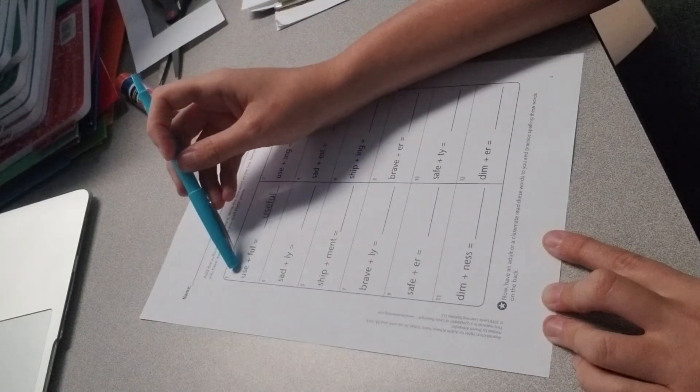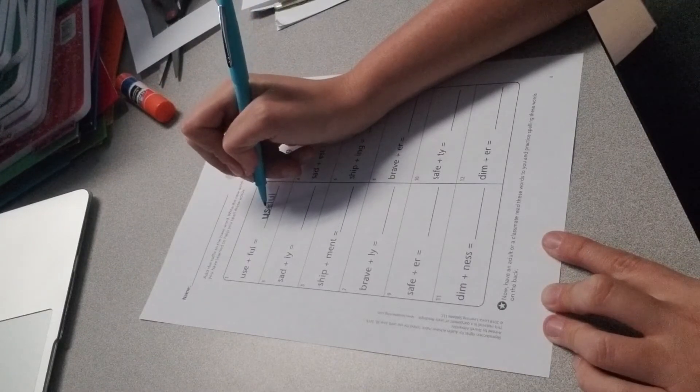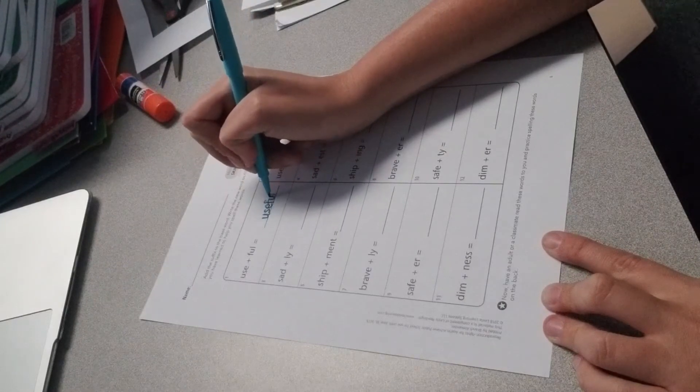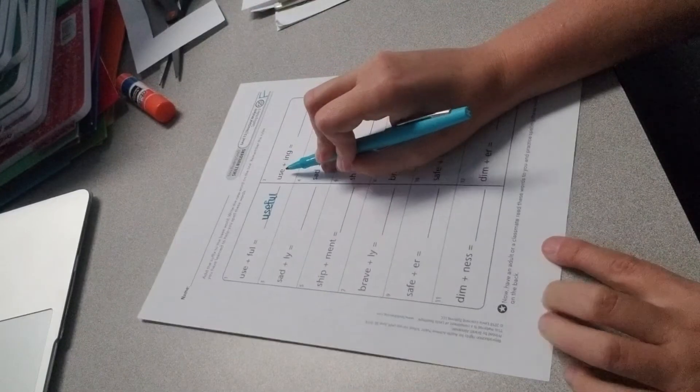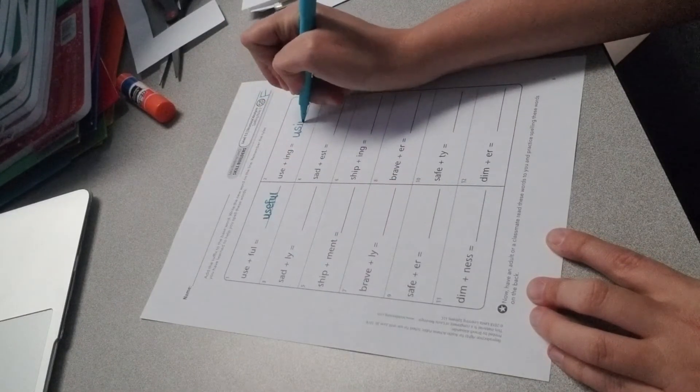So here we have use. We want to change it to useful. They have written it on the line for us: U-S-E-F-U-L. Then they want to change use to using. So you would write U-S-I-N-G.